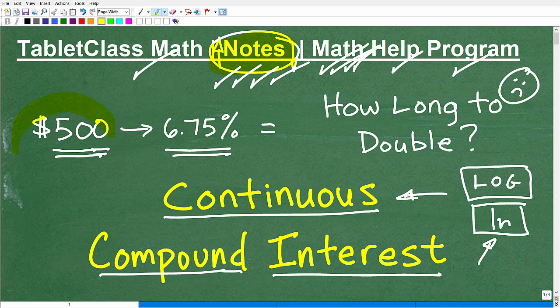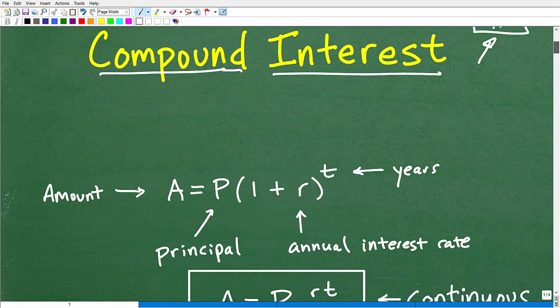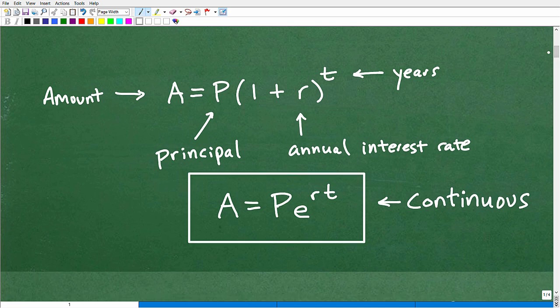So here we go. We want to know how long it's going to take this $500 to double if it's being compounded continuously at 6.75%. So, to double $500 is obviously $1,000. So, we want to know how long is it going to take this $500 to grow to $1,000 in our nice savings account if we have a 6.75% compounded continuously rate, which would be awesome if these things exist, which they do not exist in the real world, unfortunately, not at this period of time.